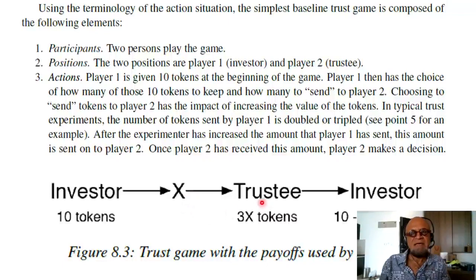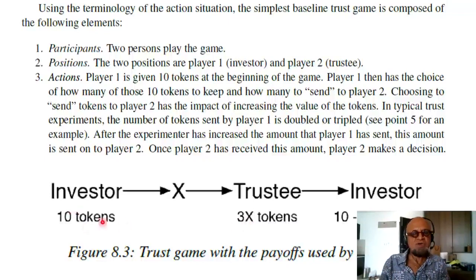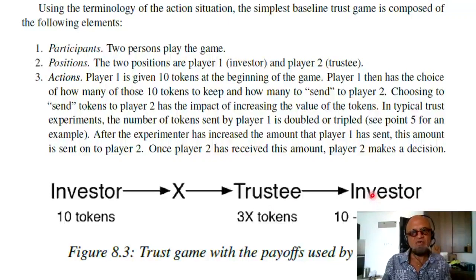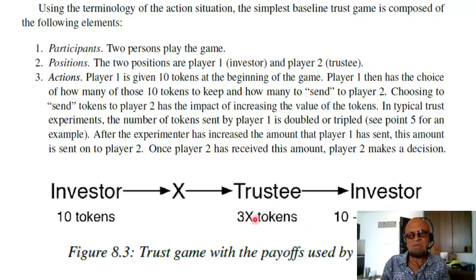X tokens are sent to the middleman and the trustee gets the amplified amount — let's say three X tokens. So the investor starts with 10 tokens, gives X away, the middleman triples it and gives it to the trustee. The trustee then has to decide to give back some amount Y to the investor. The trustee had 3X, so ends up with 3X minus Y. The investor had 10, gave away X, then gets back Y, so the investor ends up with 10 minus X plus Y.